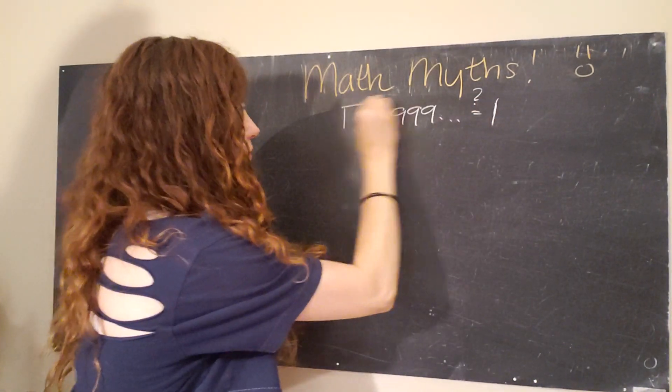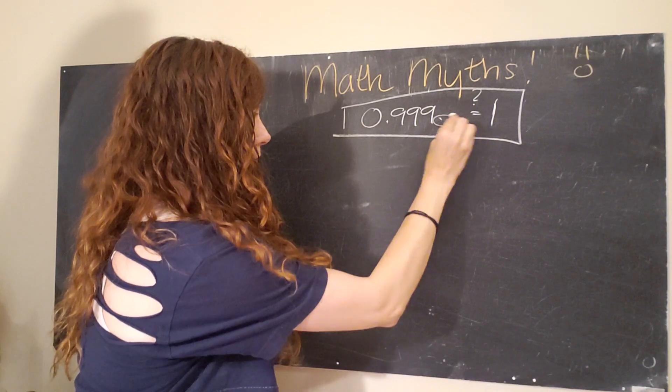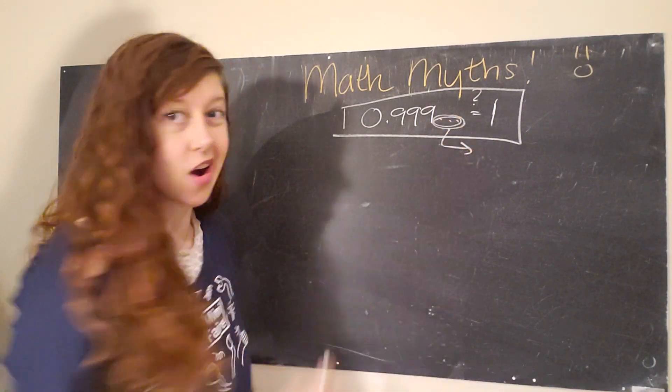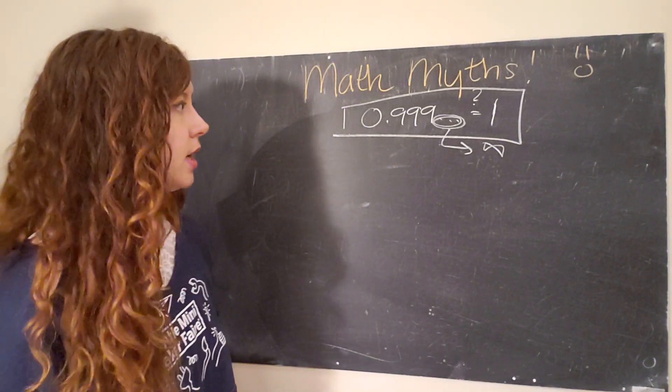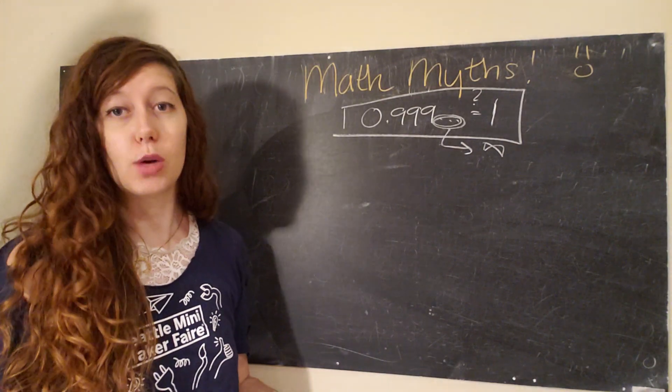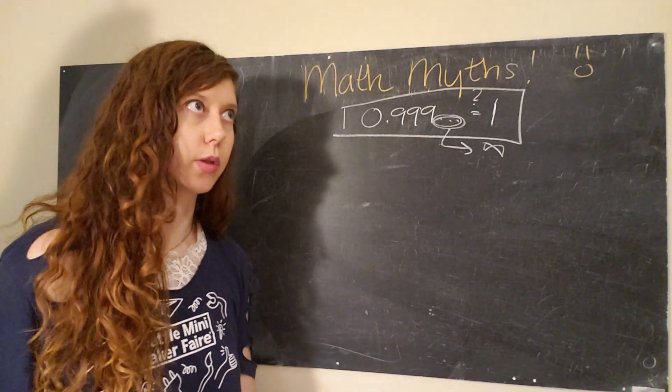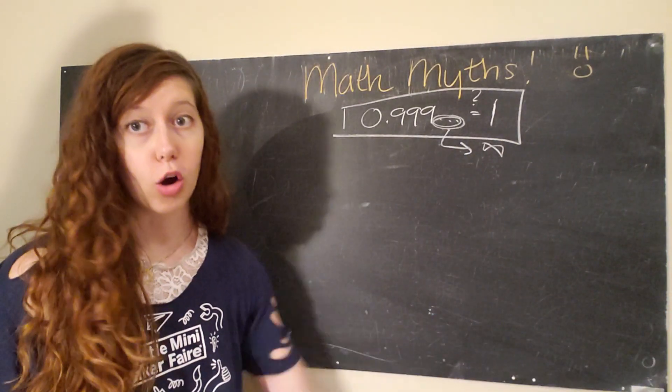And so this is our goal and the thing that I want to really point out, the thing that makes a big difference is that this dot dot dot means that the nine goes on forever or infinite. It's basically like how the fraction one-third equals 0.333333333333 etc etc etc. The threes keep going on forever.